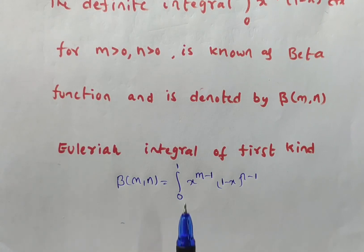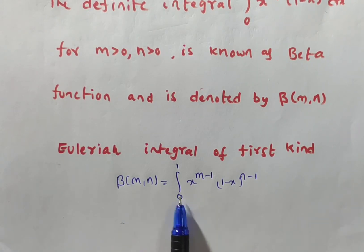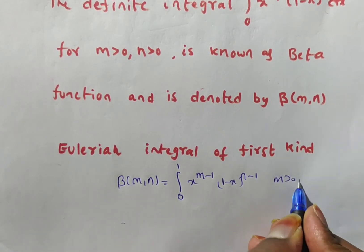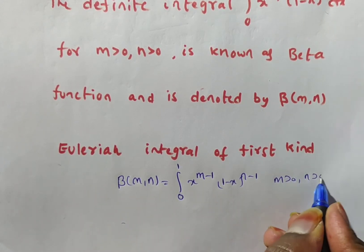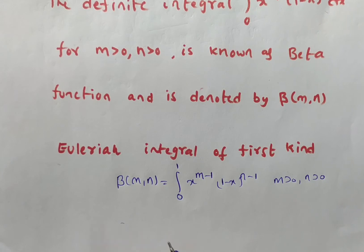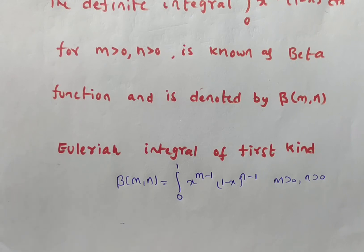This equation is valid for m greater than 0 and n greater than 0 only. When m > 0 and n > 0, the integral will be convergent. Otherwise, the integral won't be convergent.